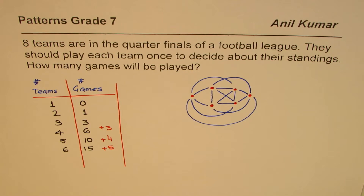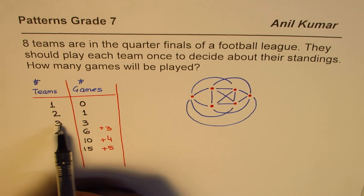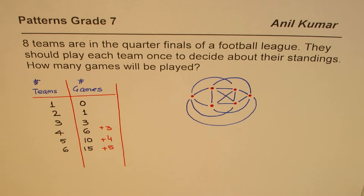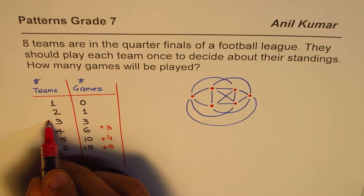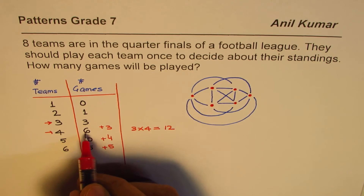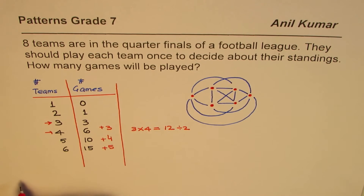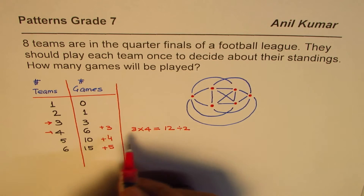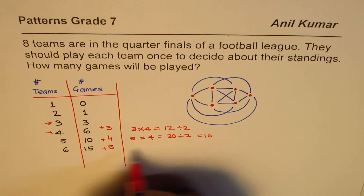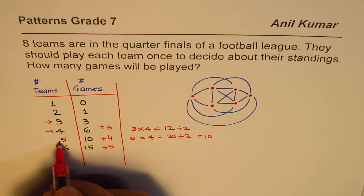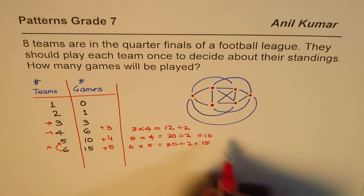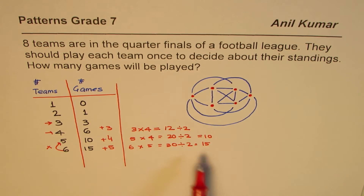The rule is: multiply the number of teams by the number before it, then divide by two. For example, three times four equals twelve, divided by two gives six. Five times four is twenty, divided by two gives ten. Six times five is thirty, divided by two gives fifteen. Do you see that?